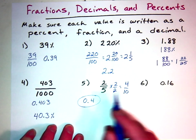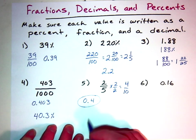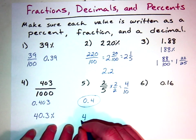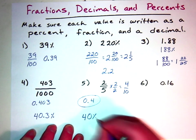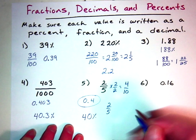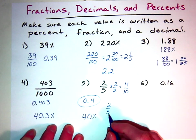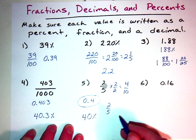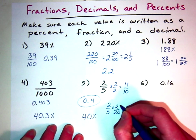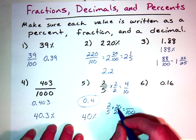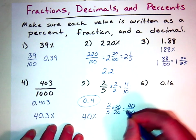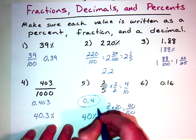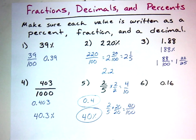Now let's turn two-fifths into a percentage. Using the decimal, move two spots to the right: starting from the left of that 4, move 1, 2, and add a zero — so it's 40%. Another way: since a percent is out of 100, if we get our denominator to 100, we multiply 5 by 20 to get 100, so multiply the numerator by 20 also, getting 40. It's 40 hundredths, which means 40%. There are lots of different strategies you can use.